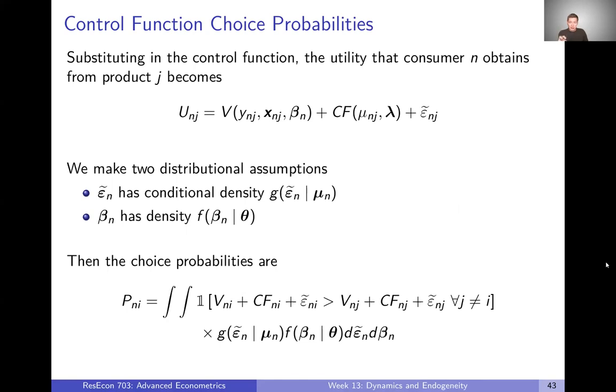Now let's substitute that in. We decomposed epsilon into two terms, our control function and epsilon tilde. So now we can write the utility that consumer n obtains from product j as our representative utility plus our control function plus epsilon tilde. Now that epsilon tilde is our unobserved random utility component. It is not correlated with Y. So we can call Y exogenous instead of endogenous because we've controlled for the source of endogeneity through this control function.